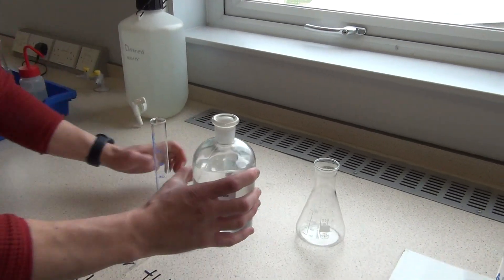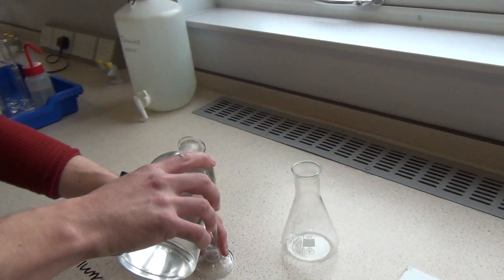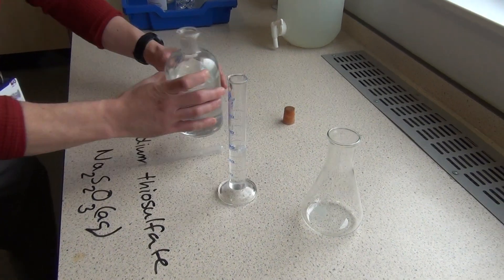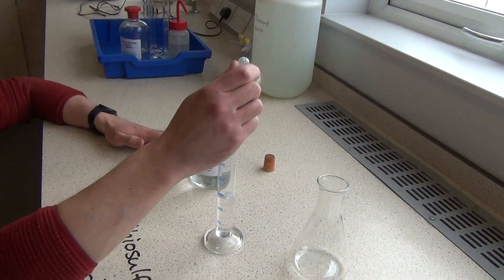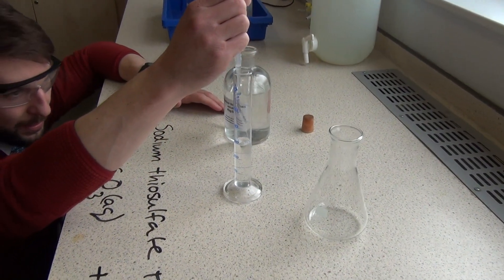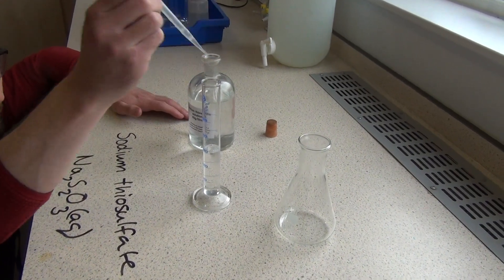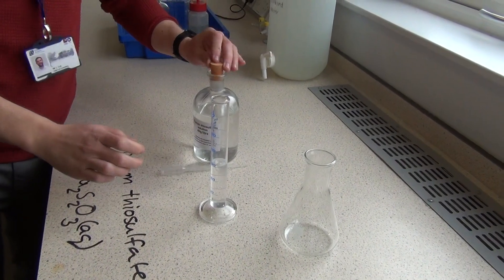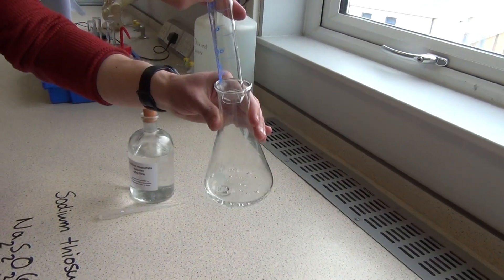First thing I'm going to do is measure about 30 centimeters cubed of the sodium thiosulfate using a measuring cylinder. Always name the equipment you use in your method. I want to make sure that the level of that liquid is right on the mark where the meniscus is at the line, the base of the meniscus is on the graduated line, so that's good. Right, so I've got 30 centimeters cubed of the sodium thiosulfate, I'm going to put that into the conical flask.